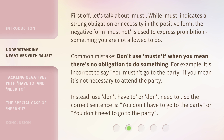Common mistake: don't use mustn't when you mean there's no obligation to do something. For example, it's incorrect to say 'you mustn't go to the party' if you mean it's not necessary to attend the party. Instead, use 'don't have to' or 'don't need to.' So the correct sentence is: 'you don't have to go to the party' or 'you don't need to go to the party.'